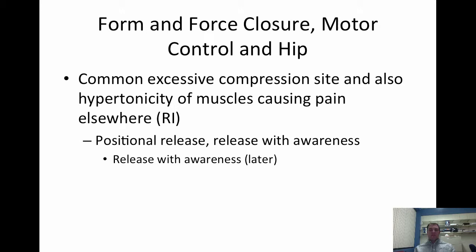With the hip, it's a pretty common site for excessive compression and for hypertonicity of muscles causing pain elsewhere. The musculature from the hip that originates or inserts on the hip and greater trochanter — this screams regional interdependence. A tight piriformis with excessive compression or hypertonicity can cause pain elsewhere in the body. She talks about positional release and release with awareness — I'll talk about that more later.